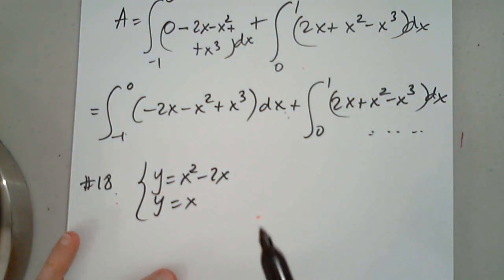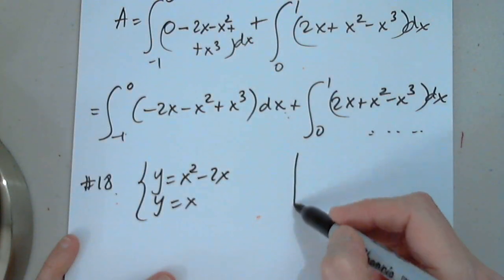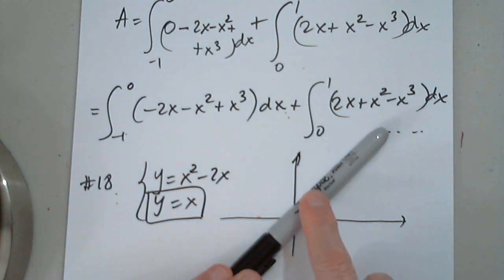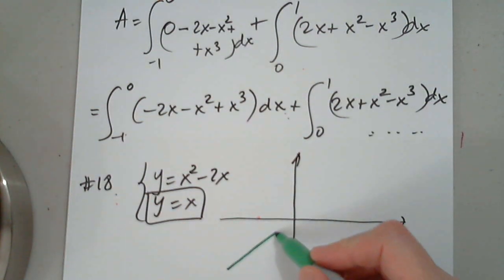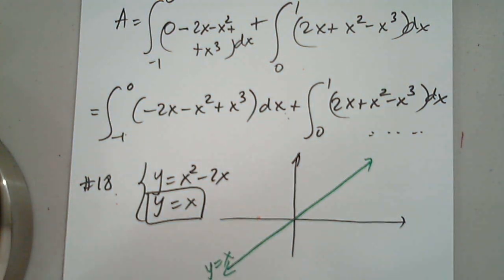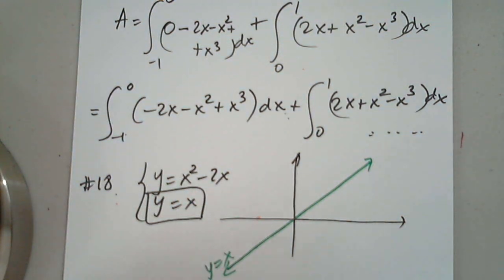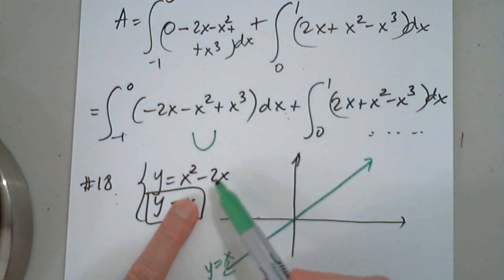Okay, so here we're asked to graph these two functions, find the enclosed area, and then find it. So first of all, this is the easiest graph of all. y equals x is the line that bisects the first and third quadrants. So this is the line. We know that from a long time ago. Now I would like to find the points of intersection and then graph this. So this will have a minimum, right?